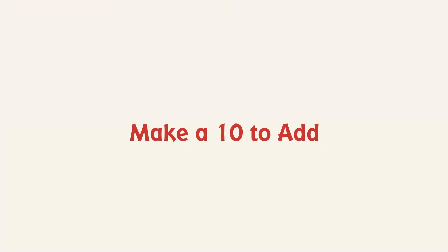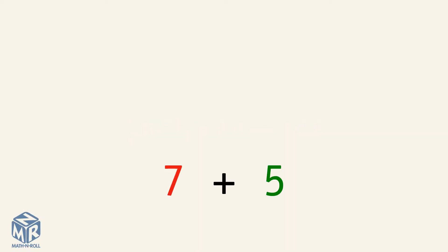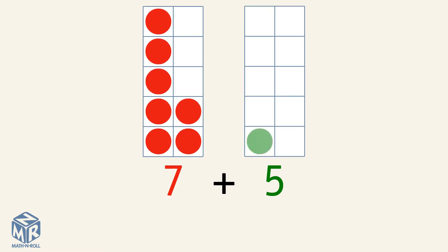Make a 10 to add. Grade 1. 7 plus 5. Let's put the numbers into 10 frames. Let's use red counters for 7 and green counters for 5. To add 7 plus 5, we're going to use the 10 strategy. We make a 10 by taking ones from one number and giving it to the other.